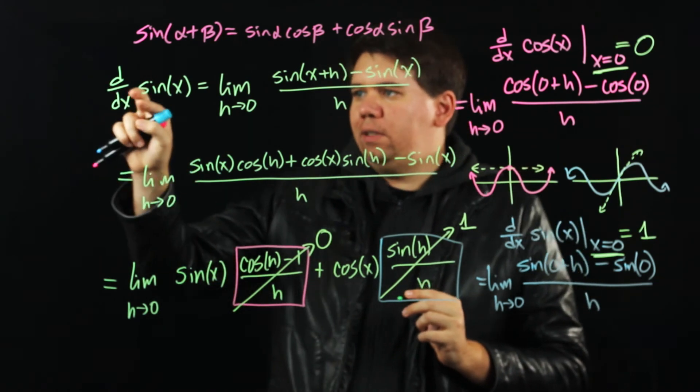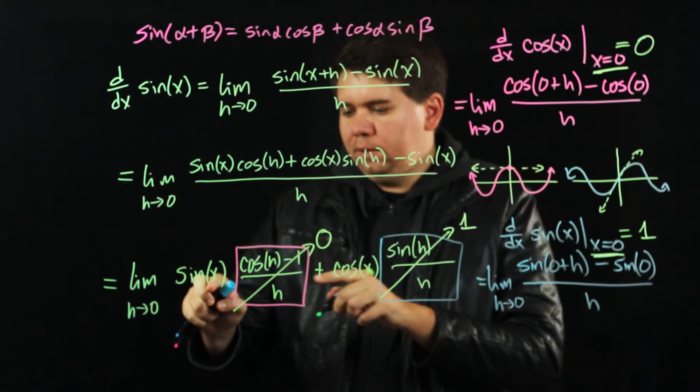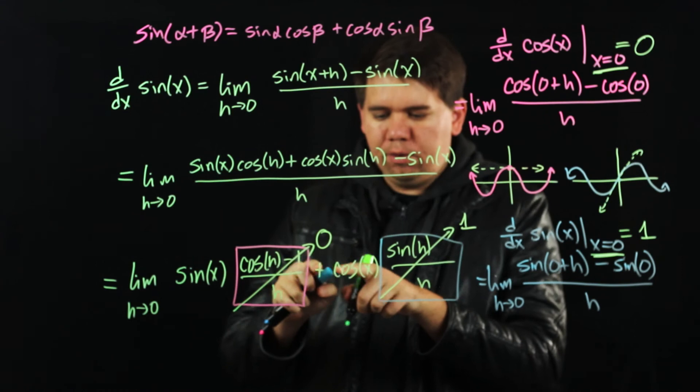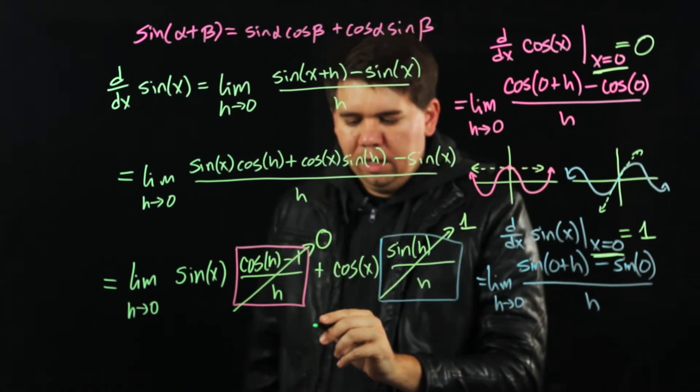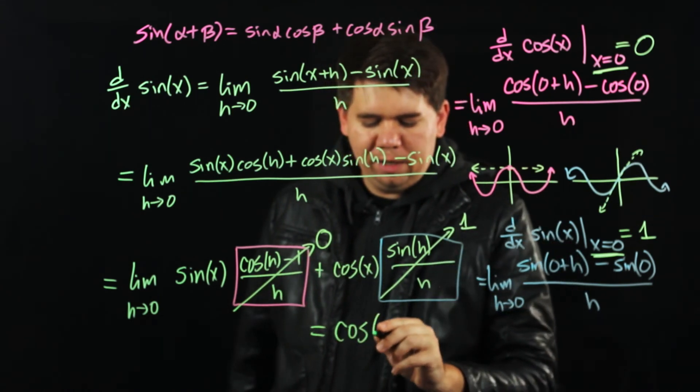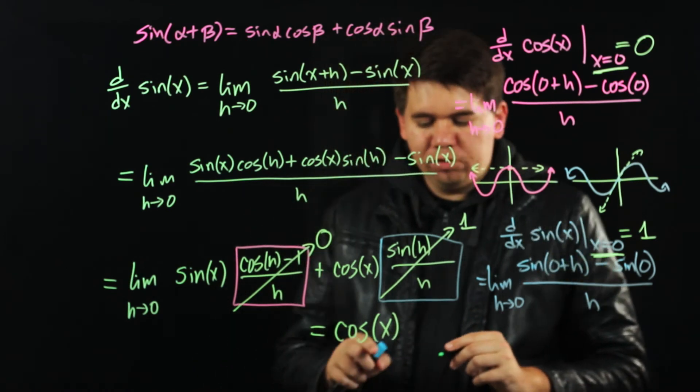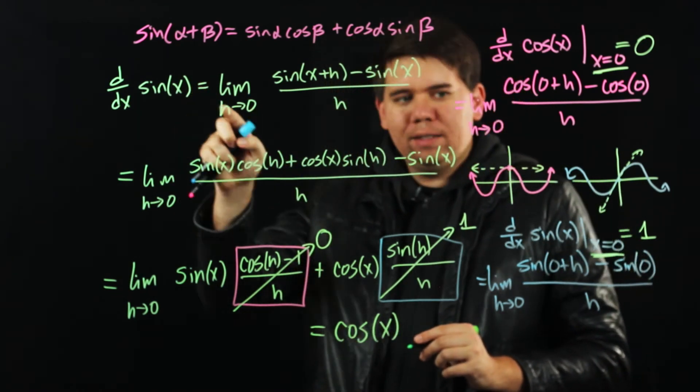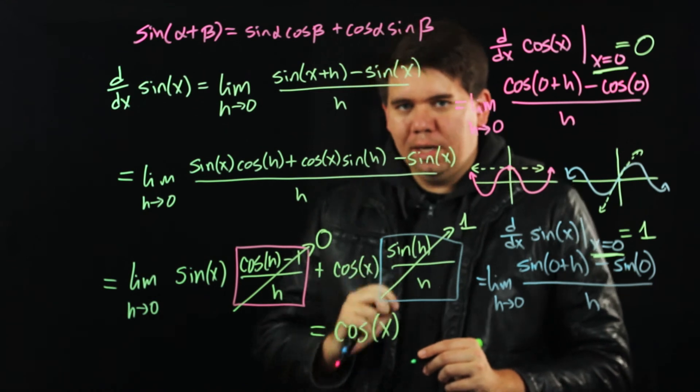Hence we're left with the derivative of sine of x is sine of x times 0, which is 0, plus cosine of x times 1. It comes out to just be cosine of x. The derivative of sine of x is equal to cosine of x.